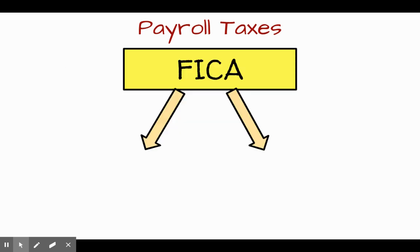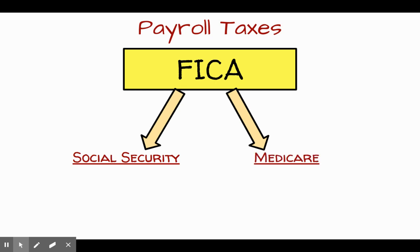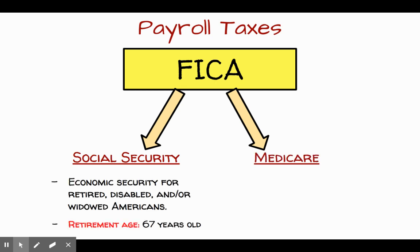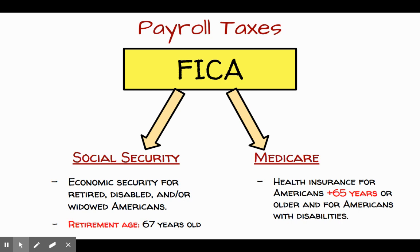FICA is really two entities rolled into one idea — it's a combination of social security and Medicare. Social security provides Americans with economic security for retired, disabled, and/or widowed Americans, and we tend to associate it with older Americans. Right now the retirement age is 67 years old. Medicare provides health insurance for Americans that are 65 years or older and for Americans with disabilities.